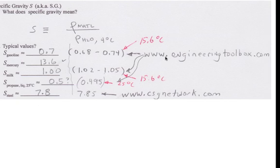To validate, I went to www.engineeringtoolbox.com. They reported gasoline varied from 0.68 to 0.74, so my value was pretty close. They reported the same value for mercury. For milk, they reported a slightly higher specific gravity, 1.02 to 1.05, so I'll remember this value slightly greater than 1. For propane, 0.495, and for steel, 7.85.